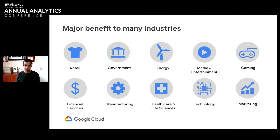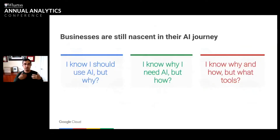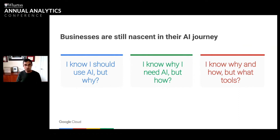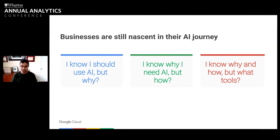As we've talked to businesses, one of the things we've seen is that businesses are still very nascent in their journey. Businesses fall into three buckets. The bulk know that they should be using AI but are trying to figure out why — why does it really matter and how is it going to add value? Then there are those who know why they need AI but how they build it is another key problem, as talent is a big gap. And then there's an increasing bucket of companies that know why and know how, but want to find the right tools. We're seeing a shift of companies moving from left to right over time.